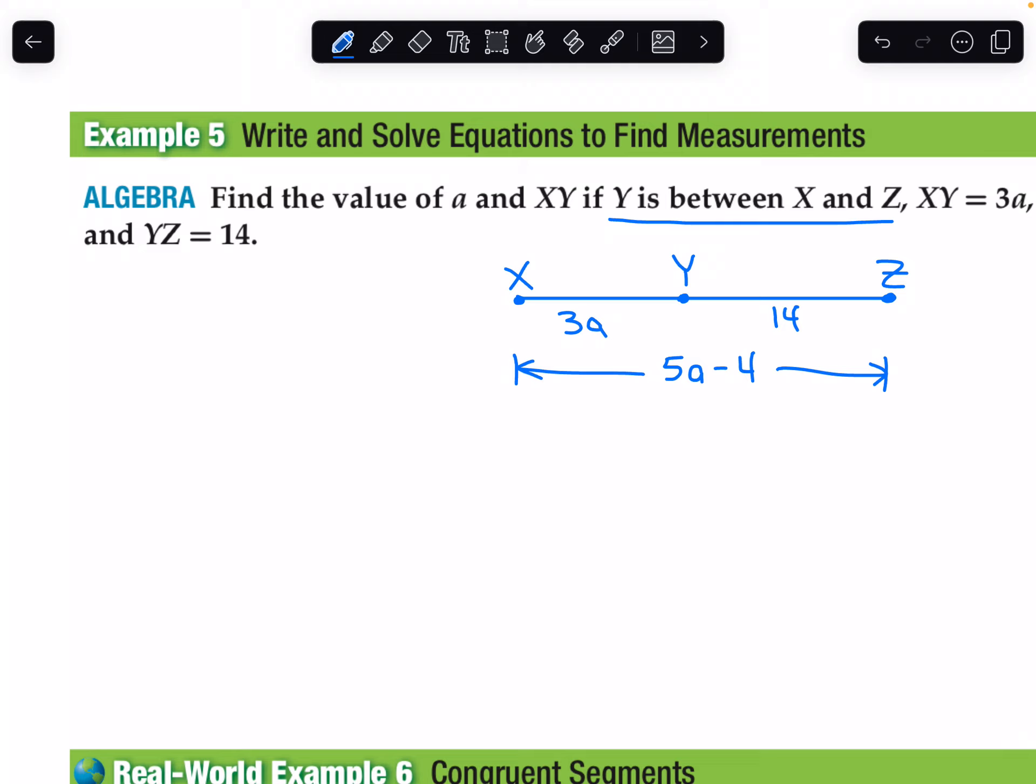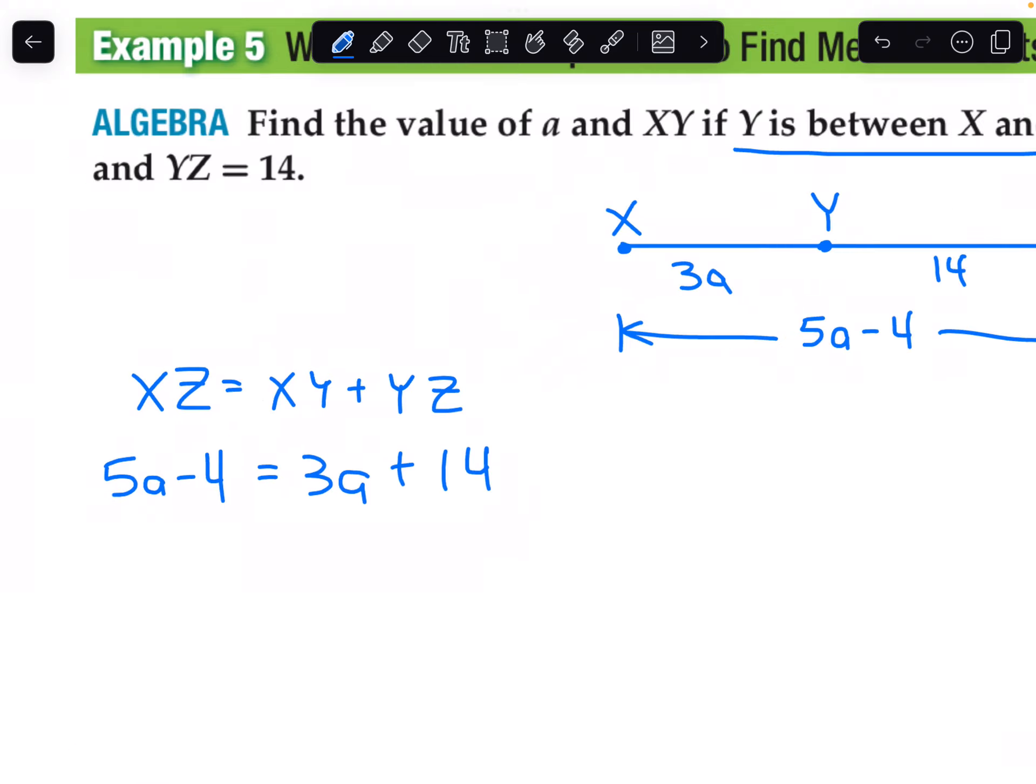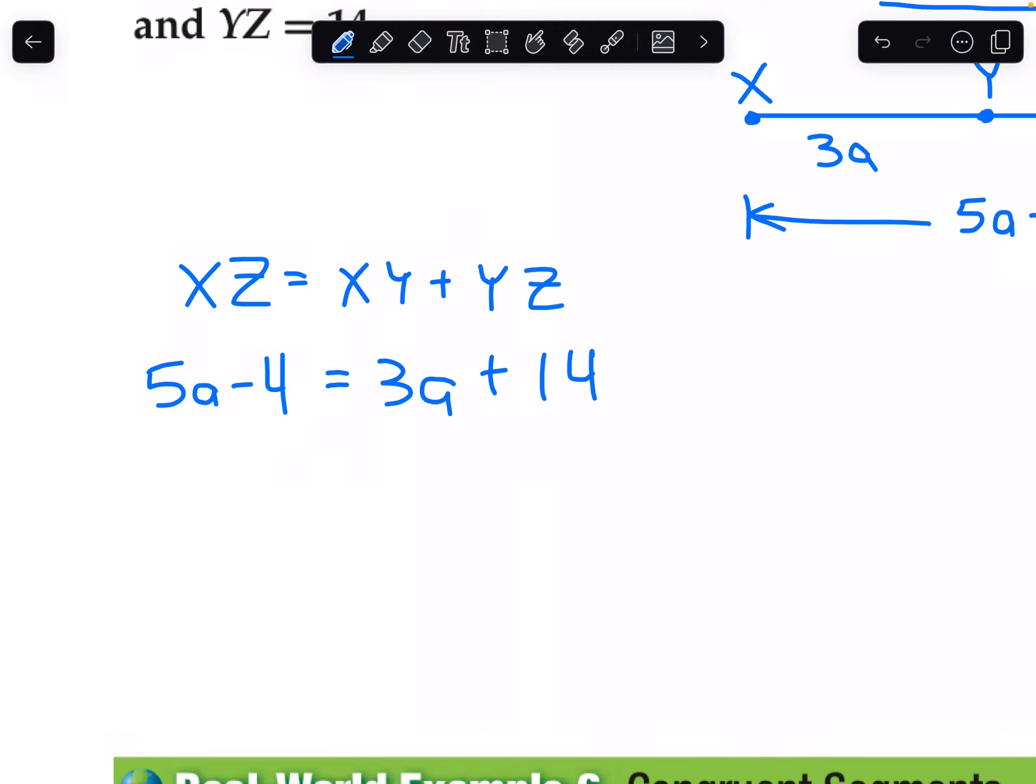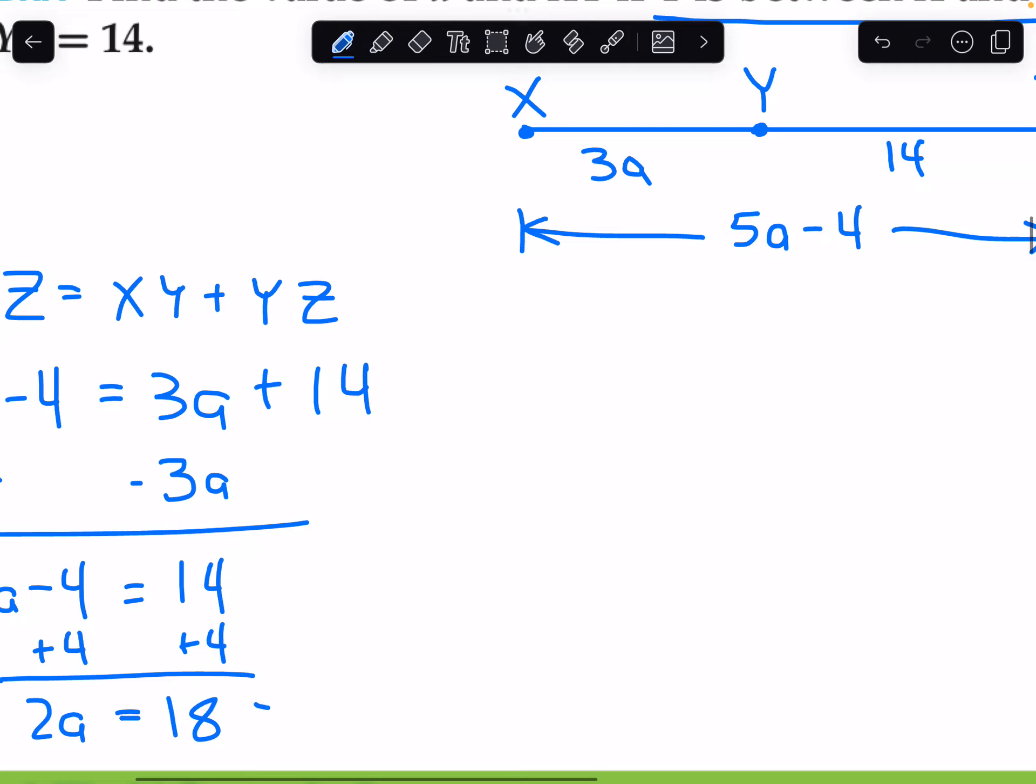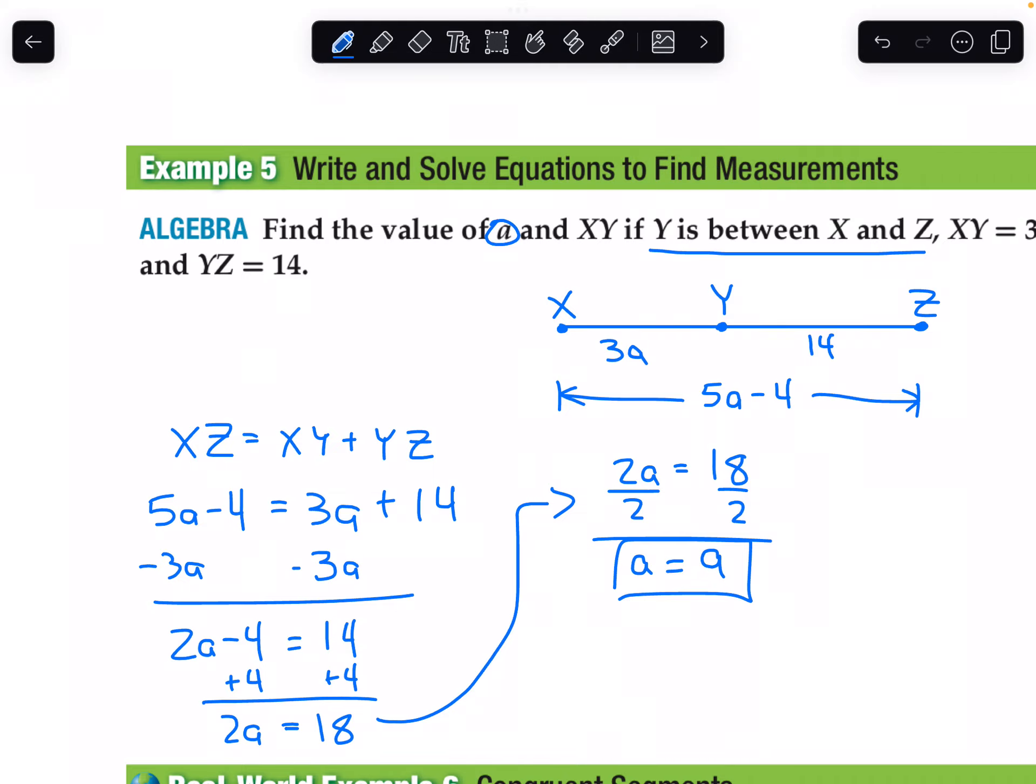From my diagram, I can set up an equation. The total distance XZ equals the sum of its parts, XY plus YZ. So 5A minus 4 equals 3A plus 14. Let's gather A's on both sides. Subtract 3A. That leaves 2A minus 4 equals 14. Add 4 to both sides. 2A equals 18. Divide both sides by 2. So A equals 9.